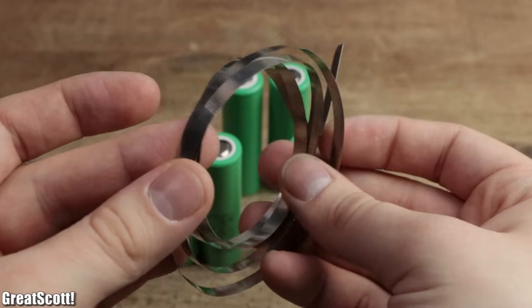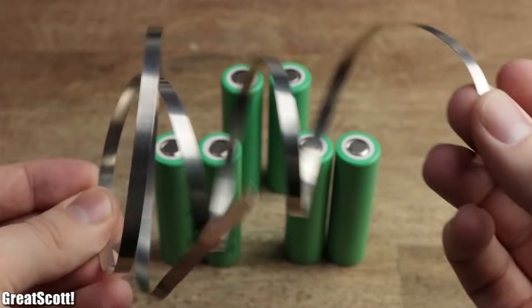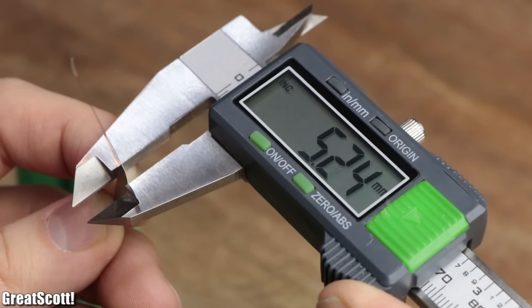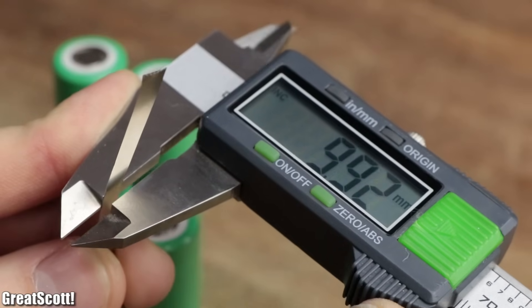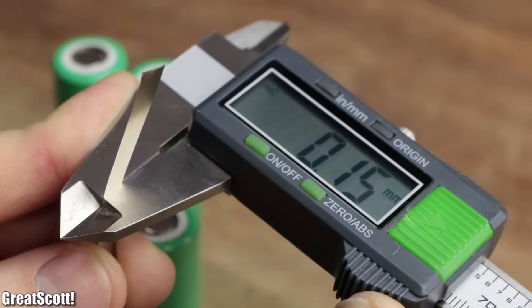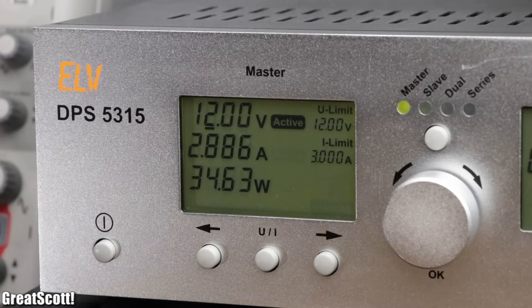Now to connect these cells properly, we need a bit of nickel ribbon. Mine has a width of 5 millimeters and a thickness of 0.15 millimeters, which will easily carry the required 3 amps for the LED strip.